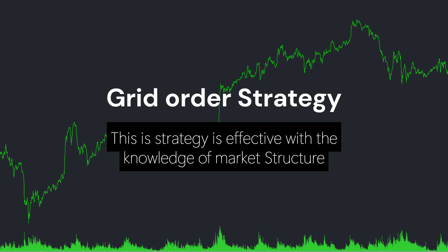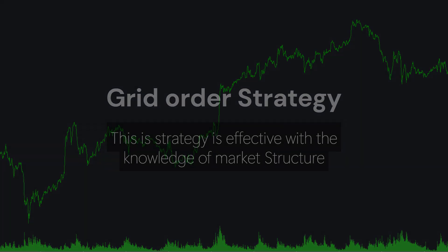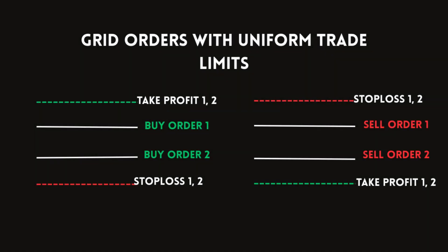Before we go in depth, there are two types of grid order concepts: the grid order with uniform trade limits and the grid order with distinct trade limits. In this illustration you will see buy orders with uniform trade limits — same stop loss and take profit — and the same goes with sell orders. So this is the grid order with uniform trade limits.